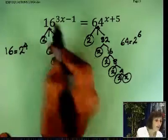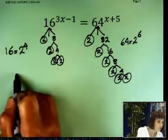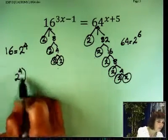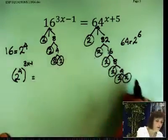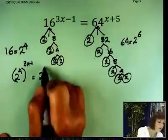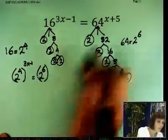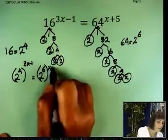Now that we found a common base, now I'm going to write, instead of 16, I'm going to put 2 to the fourth to the 3x minus 1. And here I'm going to put 2 to the sixth power.